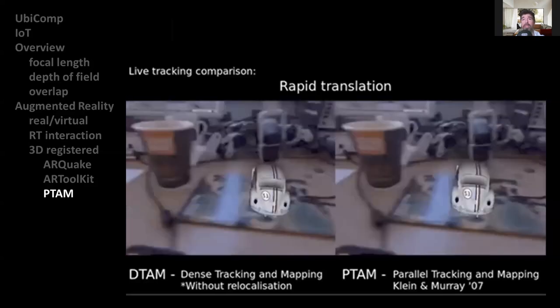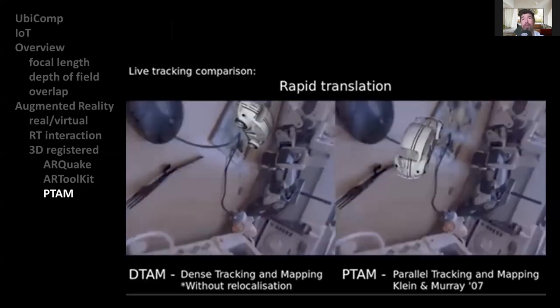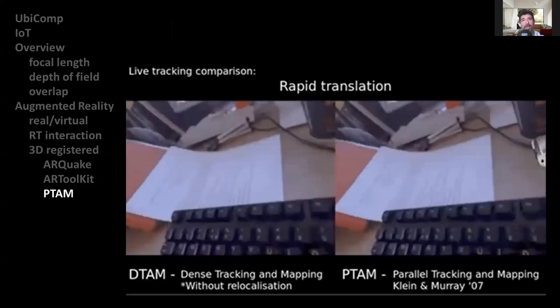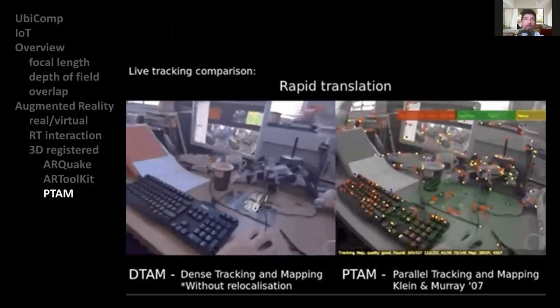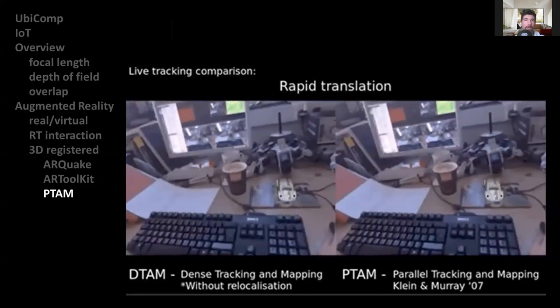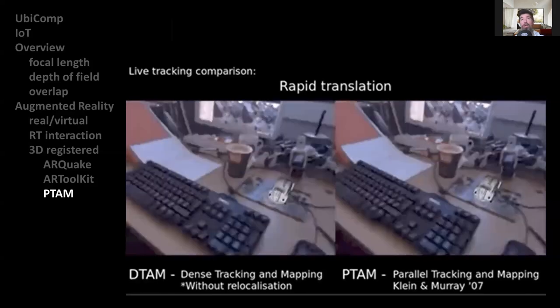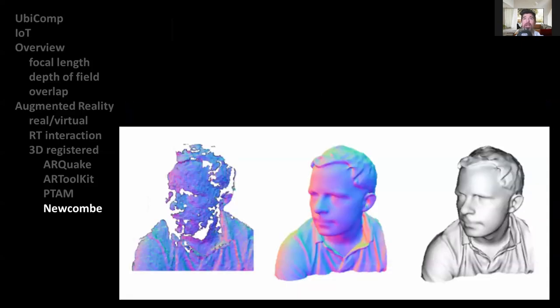However, PTAM is only one type of tracking without preparation in unknown environments. Another approach was done by the Kinect Fusion System, developed by Newcombe in 2011, which builds detailed 3D models from inexpensive depth sensors, as shown in this example here.